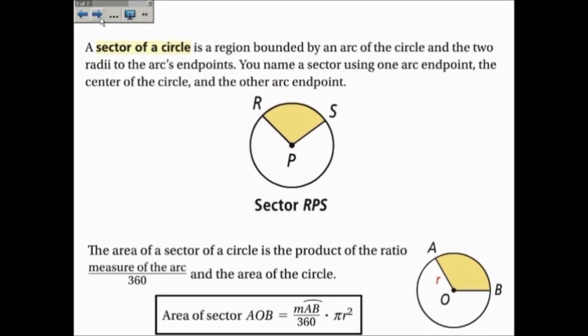Now that piece that we're dealing with, that pizza slice looking shape, is called the sector of a circle. It's bounded by an arc of the circle and two radii at the arc's endpoints. It's called a sector. And you name the sector by using one arc endpoint, the center of the circle, and the other endpoint. It reminds me a lot of an angle. You do the endpoint, middle, other endpoint. So this is sector RPS.